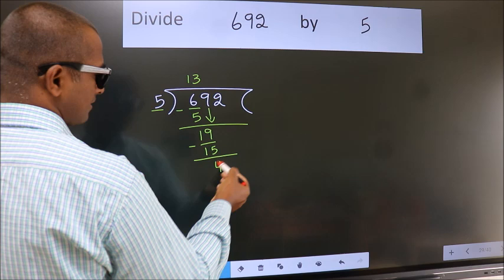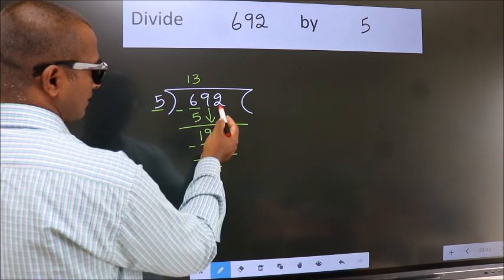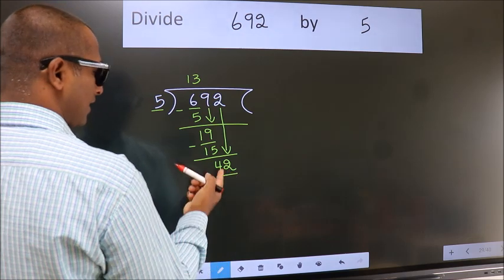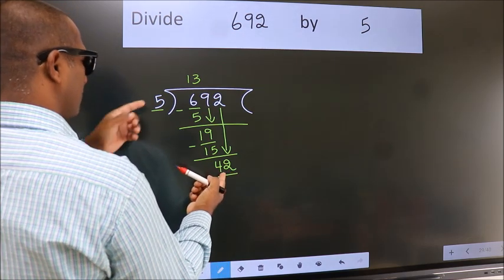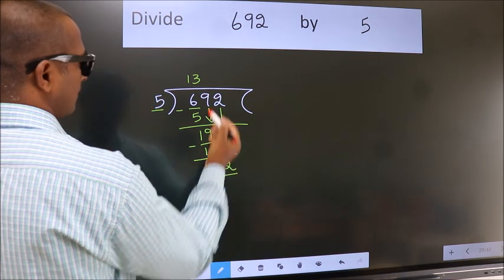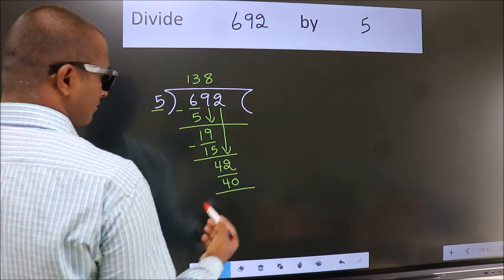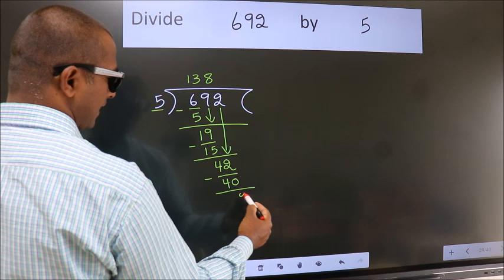After this, bring down the beside number. So 2 down, giving us 42. A number close to 42 in the 5 table is 5 times 8 is 40. Now we subtract. We get 2.